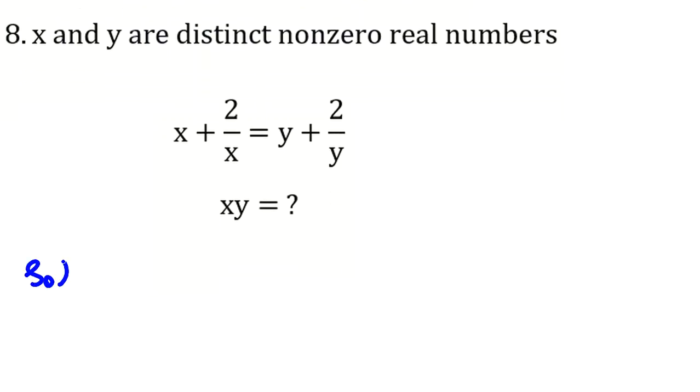Solution 1. It says x and y are distinct non-zero real numbers, such that x plus 2 over x equals y plus 2 over y, xy equals what? Let's work on the assumption of the problem.